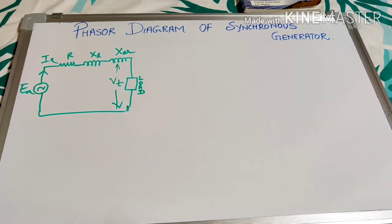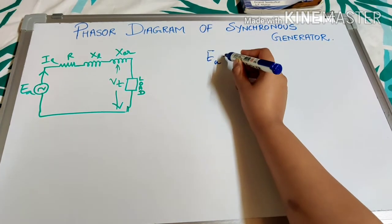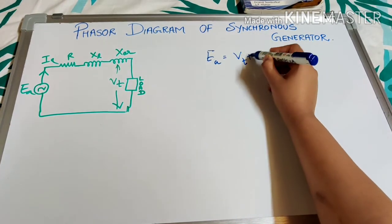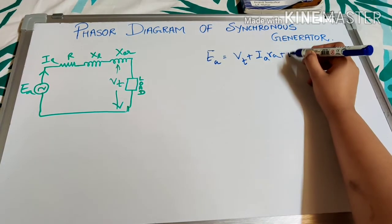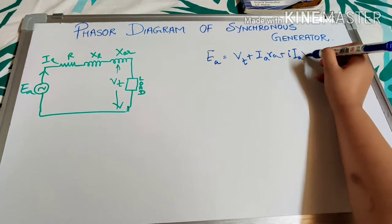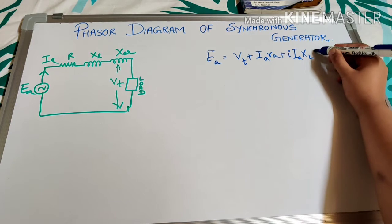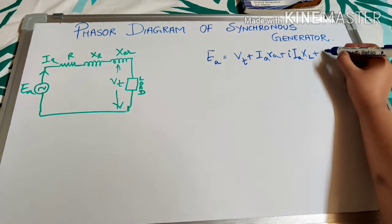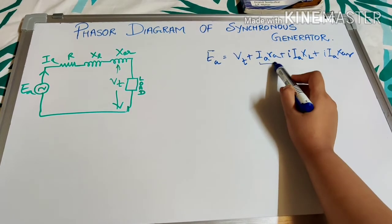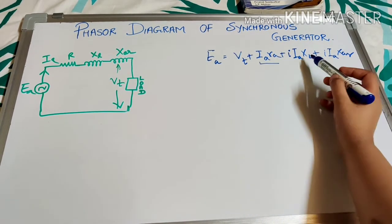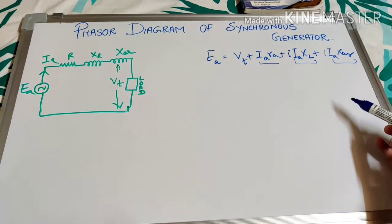The equation is: Ea equals terminal voltage Vt plus IaRa (resistance drop) plus Ia·Xl (leakage reactance drop) plus Ia·Xar (armature reaction reactance drop). Note that IaXl is not in phase — the reactance voltage drop is at 90 degrees. The resistance drop is in the current direction, the Xl drop is in XL, and the Xar drop is due to armature reaction.